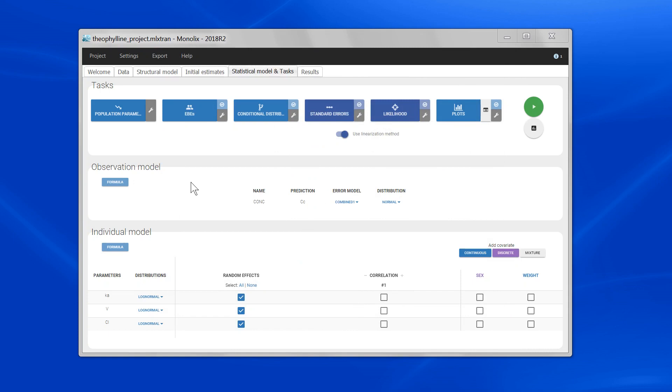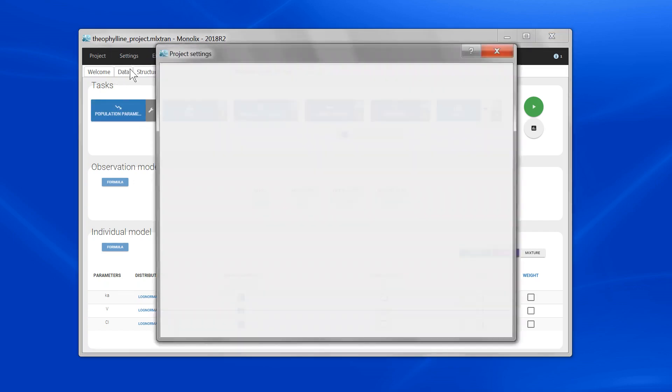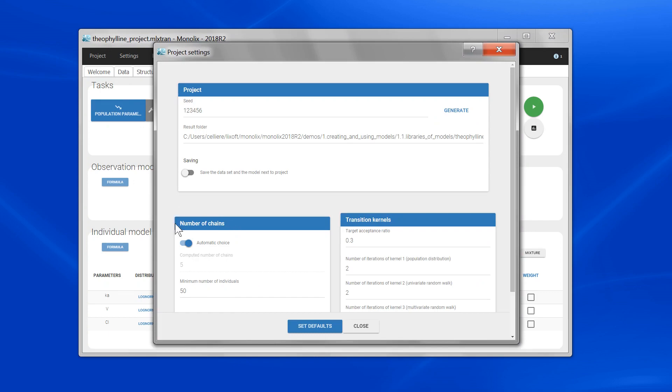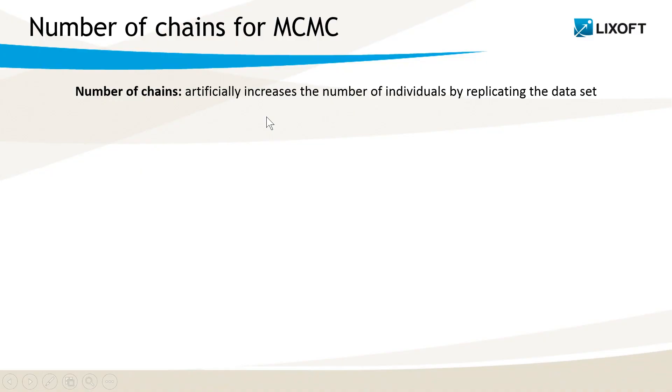The last setting is related to the Markov Chain Monte Carlo procedure that is used to sample the individual parameters, and this procedure is used not only for SAEM. The setting is not here, but in settings project settings. It's the number of chains here. The number of chains permits to increase artificially the number of individuals by replicating the dataset, exactly as if you would copy-paste the data several times.